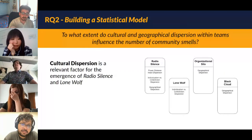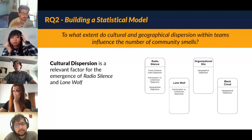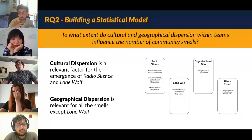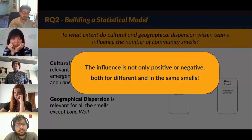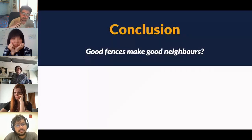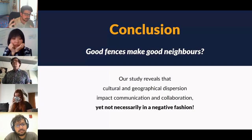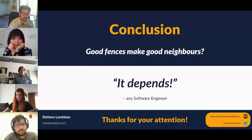Our statistical analysis reveals that GitHub presents communities with both low and high geographical and cultural dispersion values, and that GitHub is not as extremely culturally dispersed as one might expect. Cultural dispersion is a relevant factor for the emergence of Radio Silence and Lone Wolf smells, while geographical dispersion is relevant for all smells except Lone Wolf. Interestingly, the influence is not only positive or negative — it can be both, even for the same smell. To recall the title of our paper, 'Good Fences Make Good Neighbors': cultural and geographical dispersion impact communication and collaboration, but not necessarily in a negative fashion.